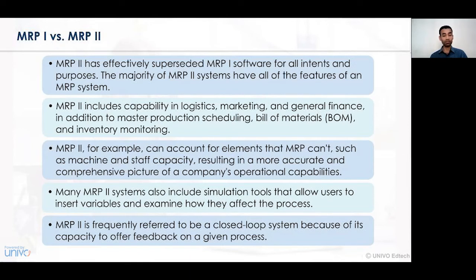MRP2 software accounts for elements such as capacity utilization and provides a more accurate and comprehensive picture of the company's operational capability. MRP2 takes into account all the features and functions of MRP1 and also provides an extension for qualitative results. Factors such as capacity utilization, output accuracy, and comprehensive organizational analysis can be easily undertaken with MRP2.